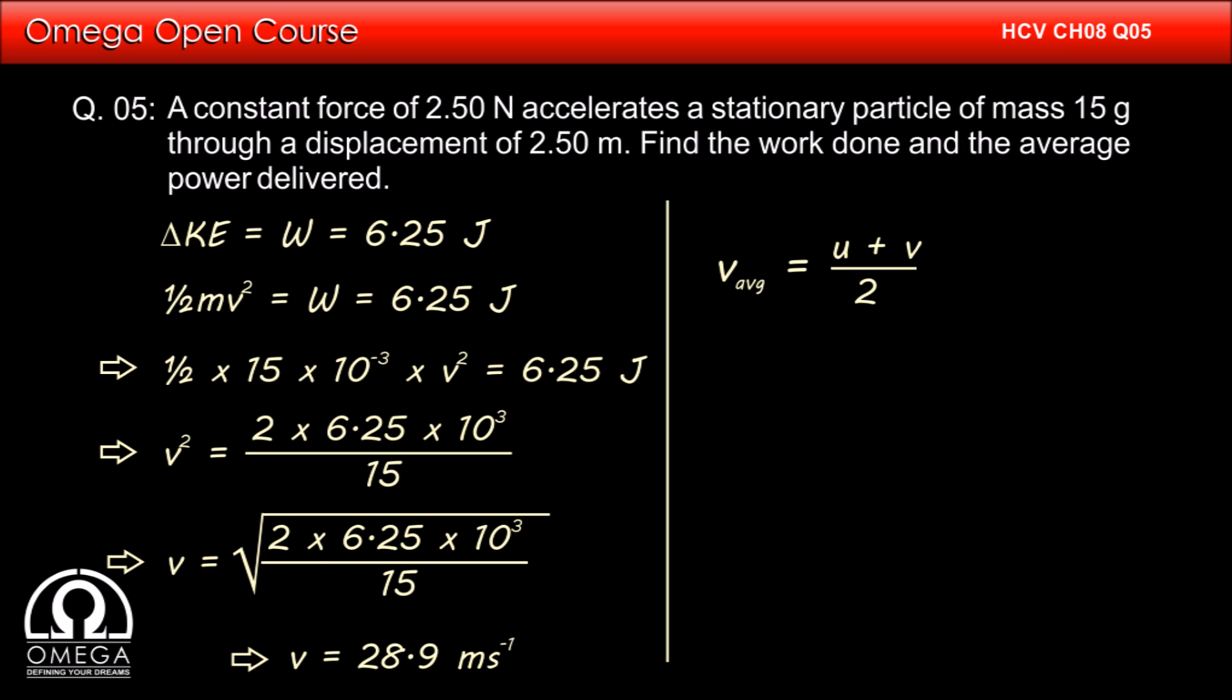Now, we know that in a uniformly accelerated motion, average velocity is equal to initial velocity plus final velocity by 2. That is 28.9 divided by 2.